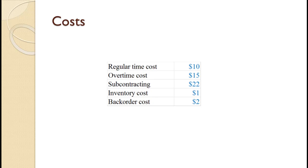The cost of producing one unit using regular time is $10. The cost of producing one unit using overtime is $15. The cost of producing one unit using subcontracting is $22. The cost of holding one unit in inventory for one period is $1. The cost of backordering one unit for one period is $2.